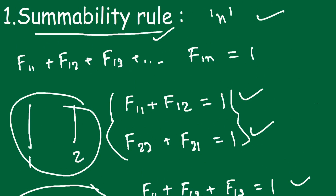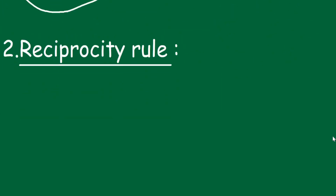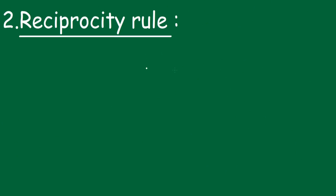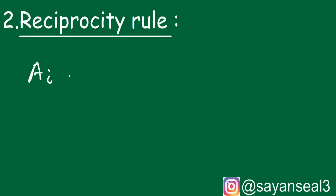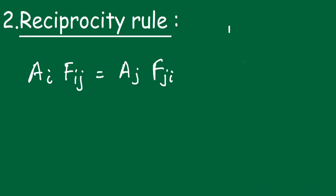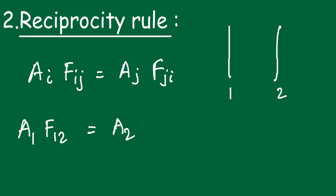The next important rule is the reciprocity rule. I am showing the rules now and will demonstrate how to use them when solving problems. The reciprocity rule states that Ai × Fij = Aj × Fji. For two surfaces with radiation heat transfer, this gives A1 × F12 = A2 × F21.